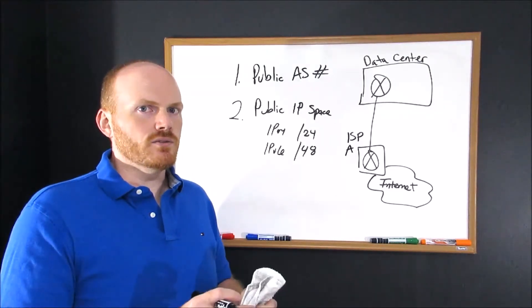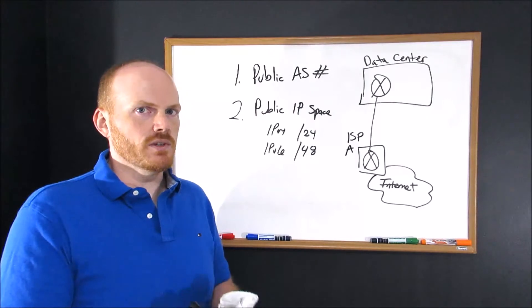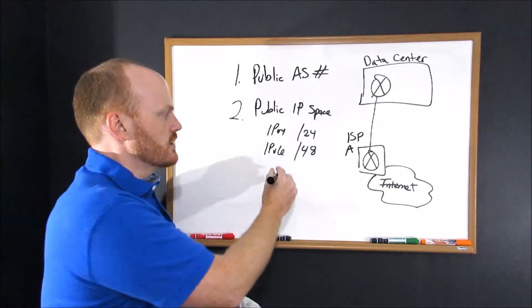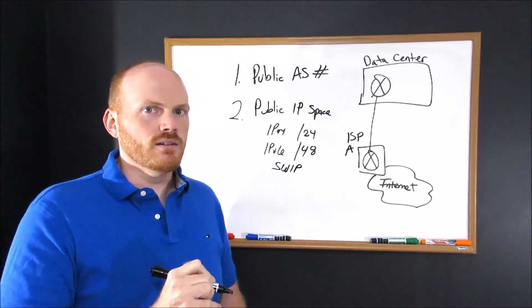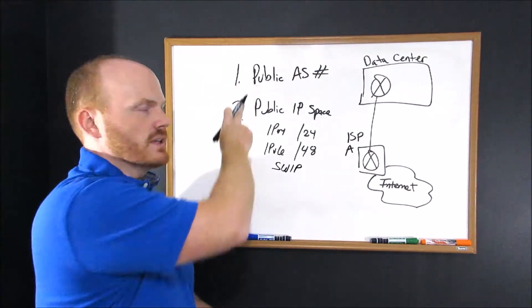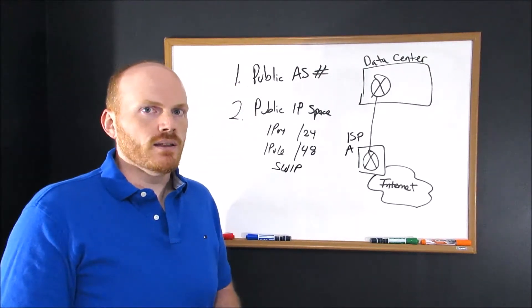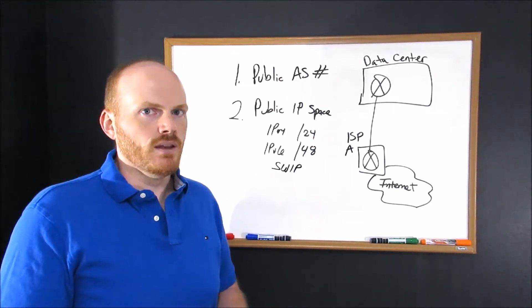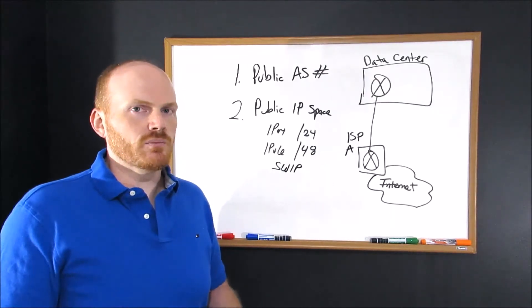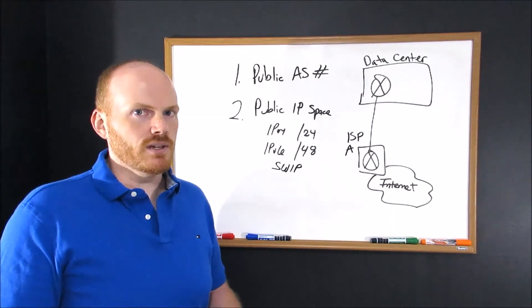One thing to keep in mind, if you do borrow IPs from your ISP, you're going to want to make sure they SWIP the subnet with your new public AS number. That'll make it appear as if you own the block, even though you're technically just borrowing it. This is another reason I highly recommend purchasing your own IPs if you can justify it.